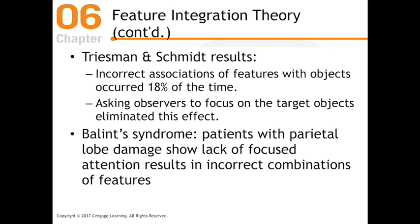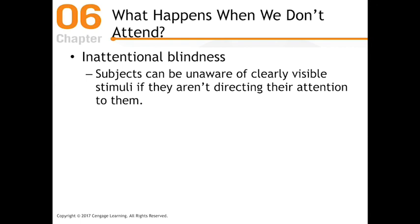These are examples of focused attention — being told to pay attention to something specific. What happens when we don't attend to something? That's called inattentional blindness. Inattentional blindness happens when there's something right in front of your face, clearly visible, but you're not directing your attention to it — and therefore you miss it. There's also inattentional deafness, where somebody's calling your name and you completely don't realize they're calling it.